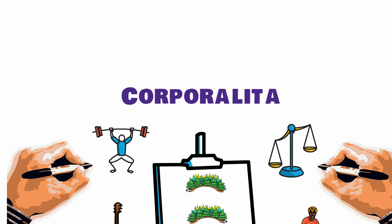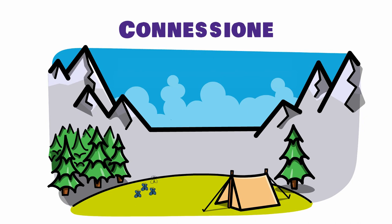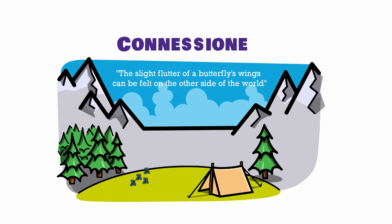Connessione: Acknowledge that everything is connected. Think in terms of a single system. There is a Chinese proverb that explains this principle perfectly: the slight flutter of a butterfly's wings can be felt on the other side of the world. Everything and everyone is connected — think in terms of what you want to do in the world.